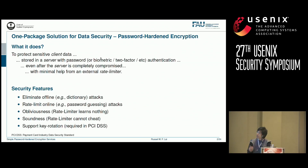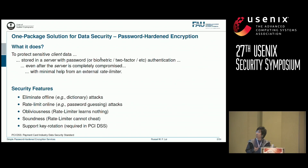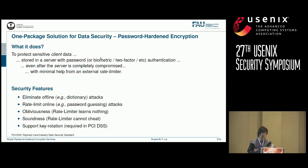Against a compromised server, we completely eliminate offline attacks such as offline dictionary attacks. It also rate limits online attacks such as password guessing attacks. Against the external rate limiter, we achieve obliviousness, meaning the rate limiter learns nothing about the password and data. We also achieve soundness, meaning the rate limiter cannot cheat by convincing the server that a password is correct when it is not. On top of all this, we support key rotation, which is required in the payment card industry data security standard if you want to store credit cards on your website.